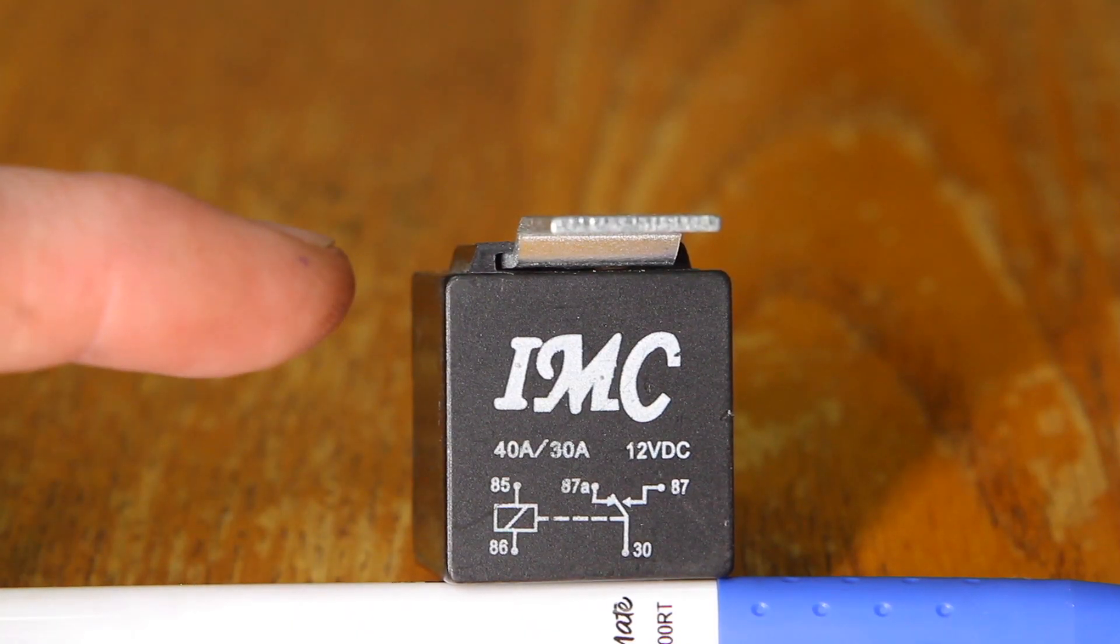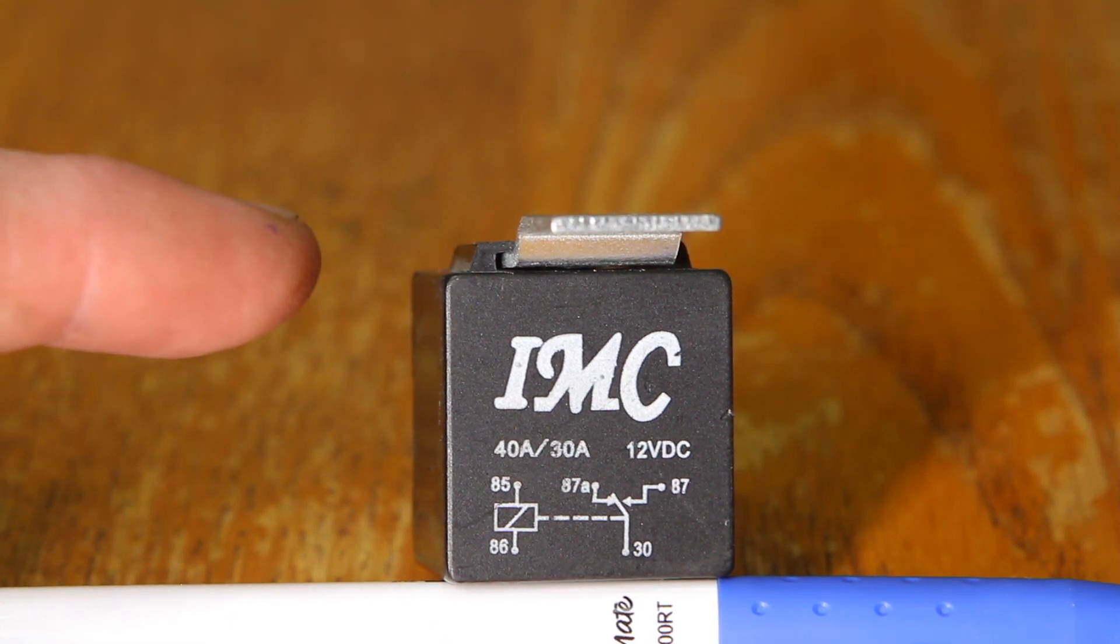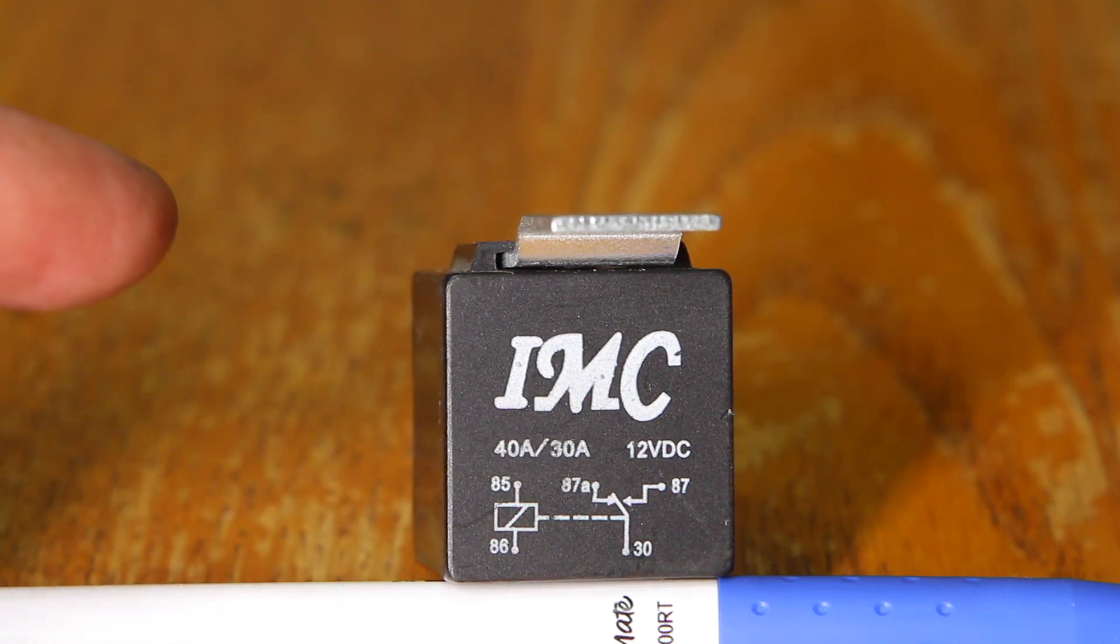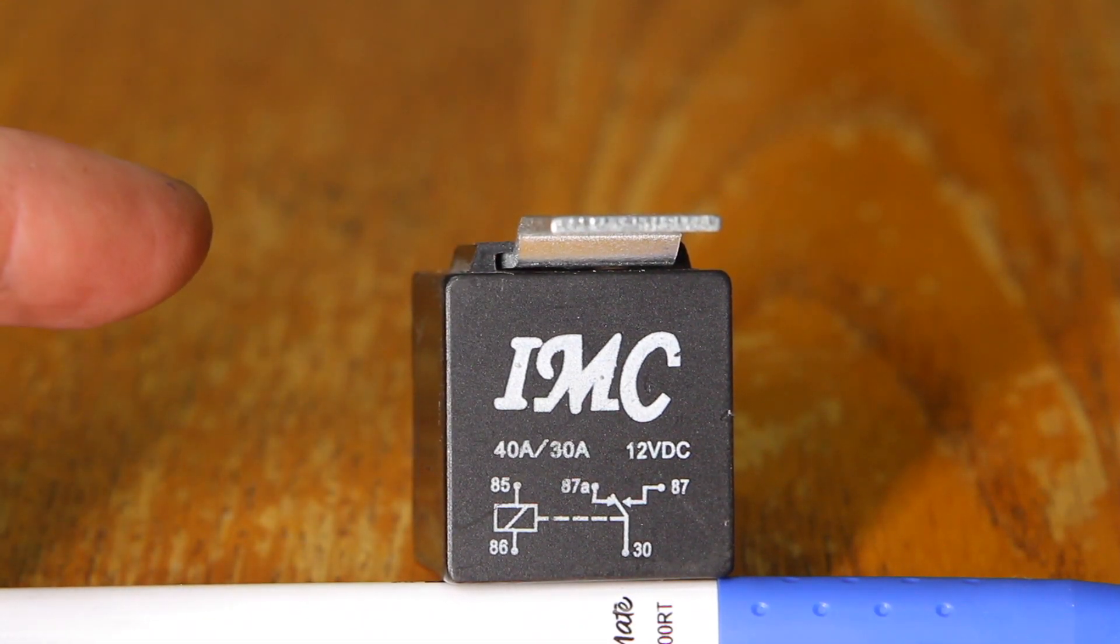When picking a relay ensure you pick one that's rated for enough current you plan on putting through it. This one's rated for around 40 to 30 amps at a maximum and 12 volts DC. That'll be plenty for running heated grips, auxiliary lights, or a phone charger for sure.